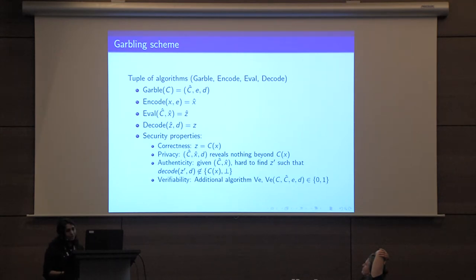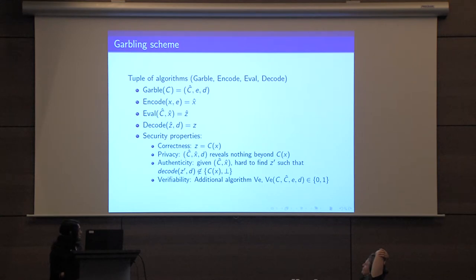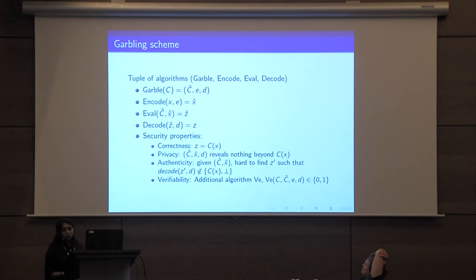In addition to these standard properties we also want verifiability, which means there is an additional algorithm called Verify that takes a circuit C and a purported garbled circuit Ĉ and outputs 1 if Ĉ is indeed a valid garbling of C and 0 otherwise.